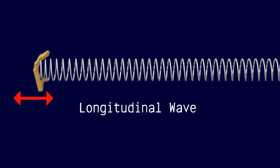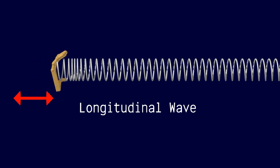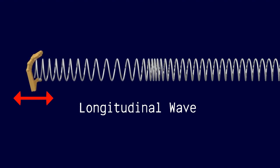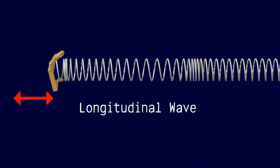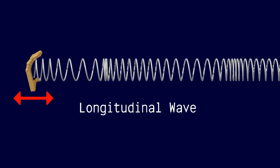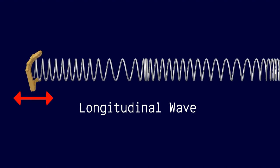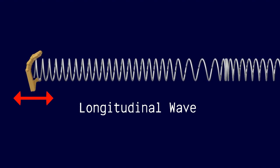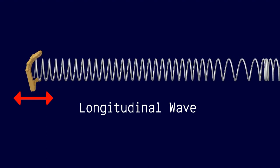In a longitudinal wave, the disturbance that makes up the wave is along the direction in which the wave travels. Longitudinal waves are also referred to as compression waves.